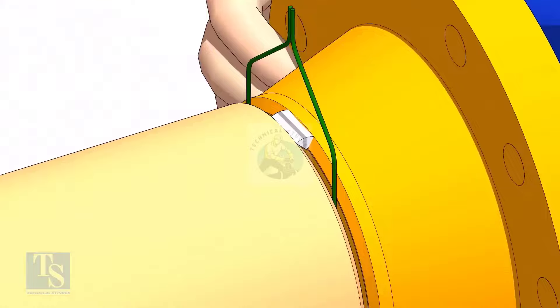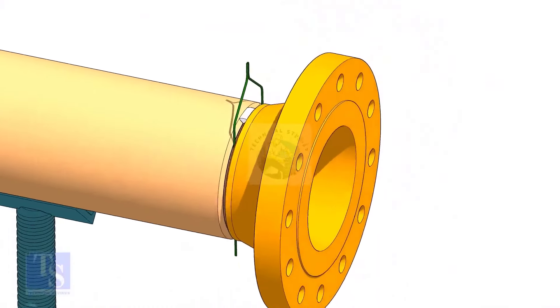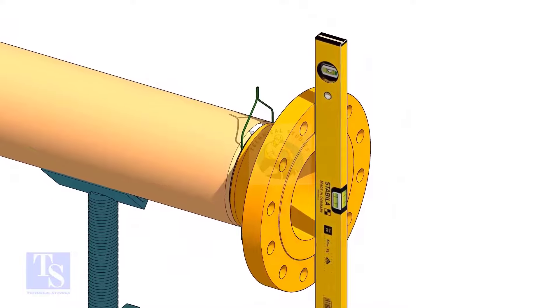Tack weld on the top side of the joint. Check the level of the flange vertically and tack weld on the bottom side of the joint.